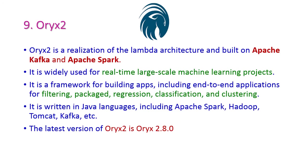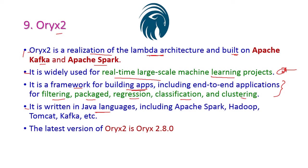The next one is ORYX2. It is a realization of the Lambda architecture built on Apache Kafka and Apache Spark. It is widely used for real-time large-scale machine learning projects and is a framework for building apps including end-to-end applications for filtering, regression, classification, and clustering. It is written in Java and includes Apache Spark, Hadoop, Tomcat, and Kafka. The latest version of ORYX2 is 2.8.0.